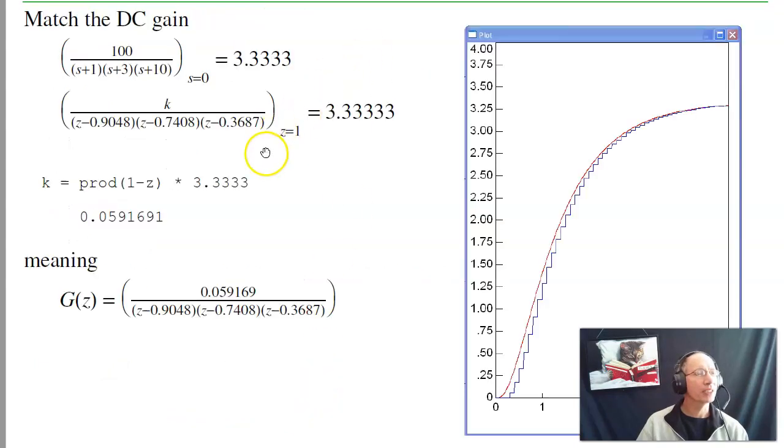Next step is match the DC gain. The DC gain of the plant is 0.3333. The DC gain of my compensator should be 0.3333. Solve for K, and I get K as 0.0591. So there's G(z).